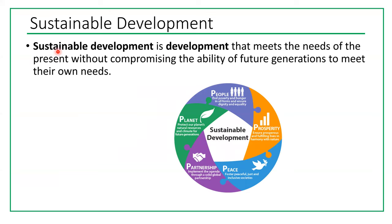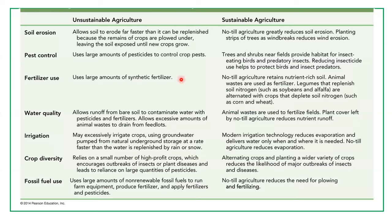We can also use sustainable development, which is development that meets the needs of the present without compromising the ability of future generations to meet their own needs. In other words, we need to grow as much food as we need, have as much fish and meat as we need, while making sure that the next generation will also have sources of food, oxygen, and water.